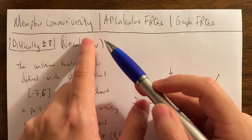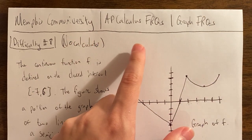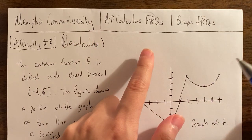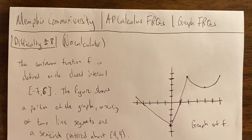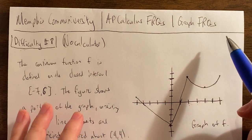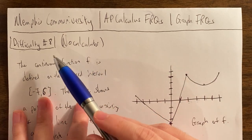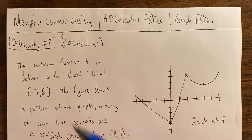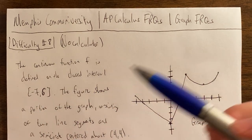Hello, this is Memphis Community University. Welcome — we are doing an AP Calculus Free Response Question practice. It is going to be a Graph Free Response Question. Today is difficulty number 8, so we are getting up there in difficulty.